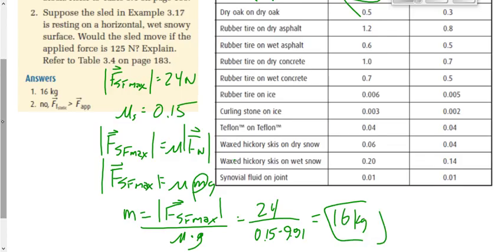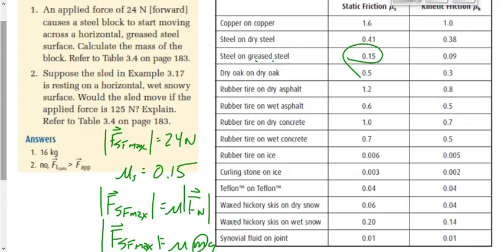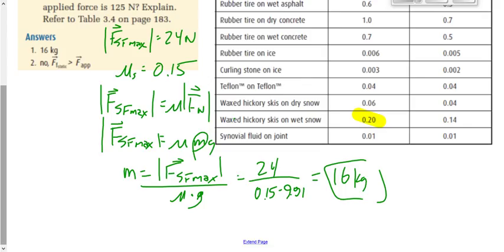We go to two significant digits because 24 has two digits and 0.15 has two digits — zeros at the start don't count, but zeros at the end do. Final answer should be two significant digits. That's important now because it counts.